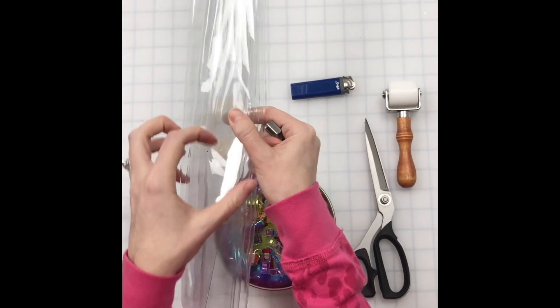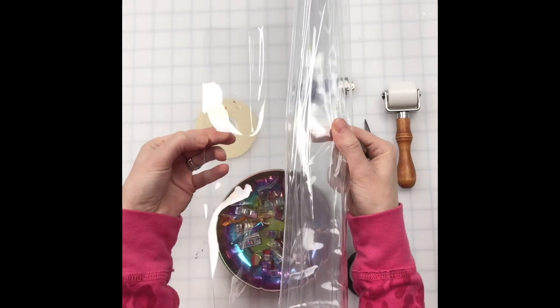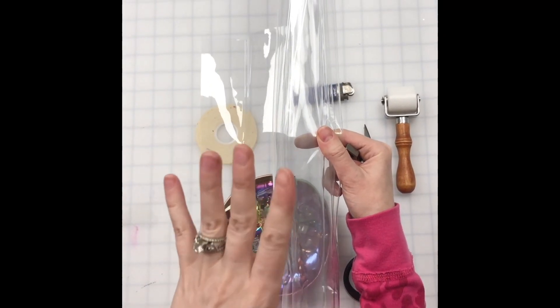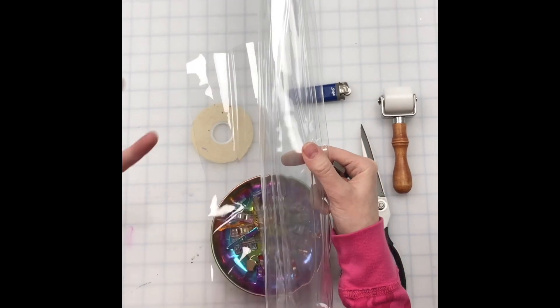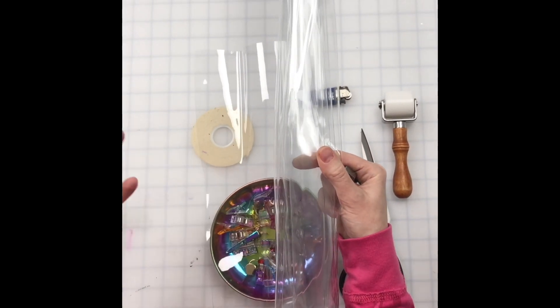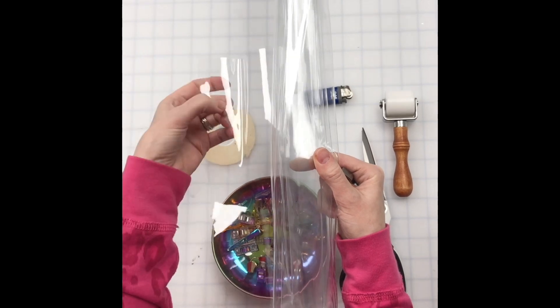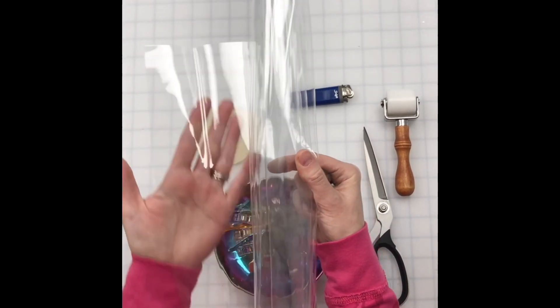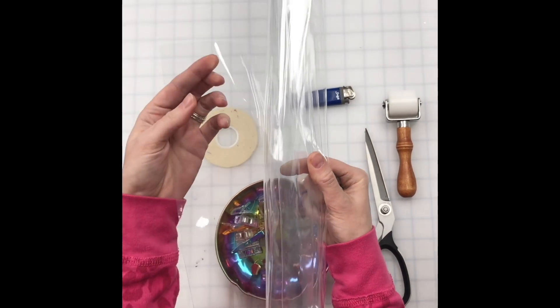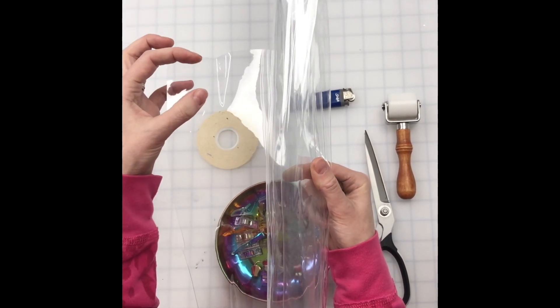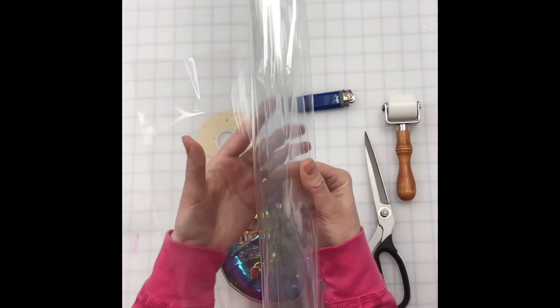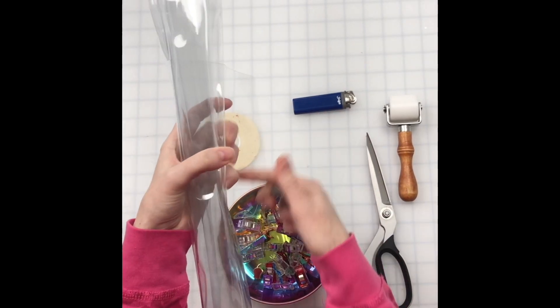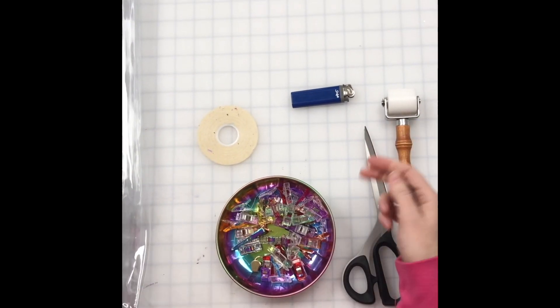This type of vinyl acts very similar to faux leather in that once you poke holes they're permanently there. But it doesn't have that fabric backing that adds extra strength to it. So you really want to increase your stitch length and make sure there's no pulling, or you're going to perforate your material and your bag is going to be tearing left and right.